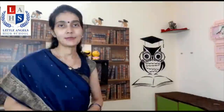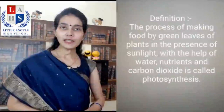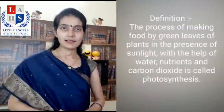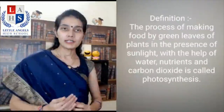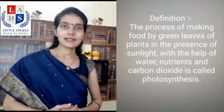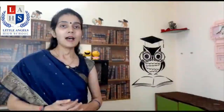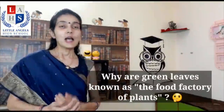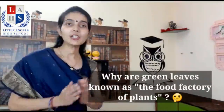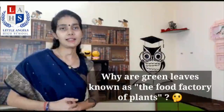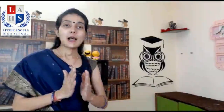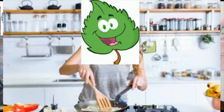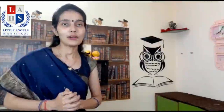This covers our second topic — what is photosynthesis. The process of making food by the green leaves of the plants in the presence of sunlight, with the help of water, carbon dioxide, and nutrients, is called photosynthesis. Coming to our third topic: why are leaves known as the food factory or kitchen of the plant? Since food is made by the green leaves, green leaves are known as the food factory or kitchen of the plant.